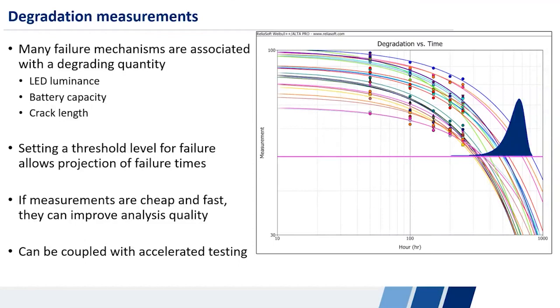They can't reasonably accelerate enough to get the failures that they would need to make the reliability statements that they need to make. They can't prove that their reliability is high enough because the intake manifold starts melting once they accelerate beyond maybe two or three times the field condition. So what you can do in situations like that is you could look at something called degradation, degradation analysis, which is basically, for a lot of failure mechanisms, you have a degrading quantity associated with them.